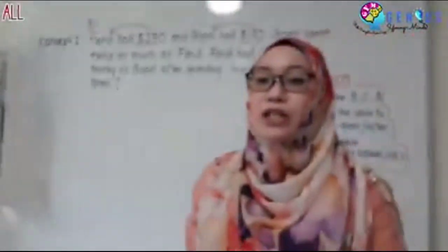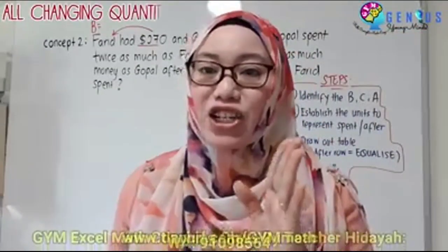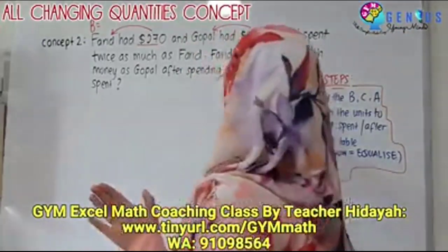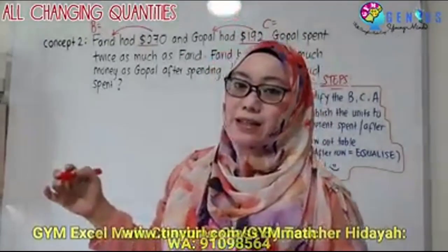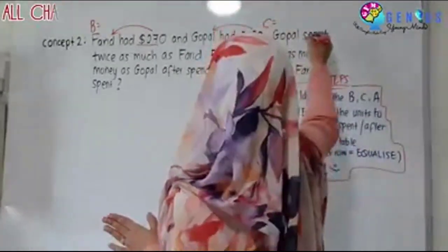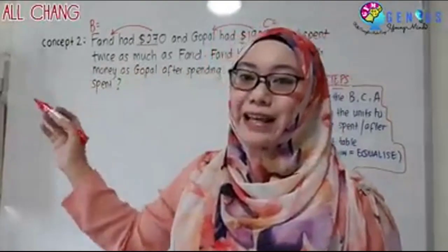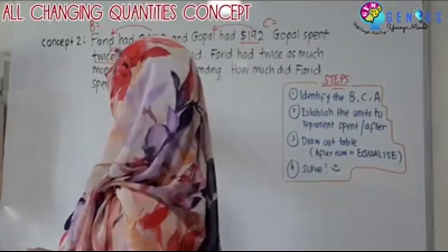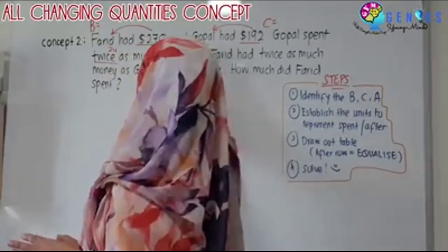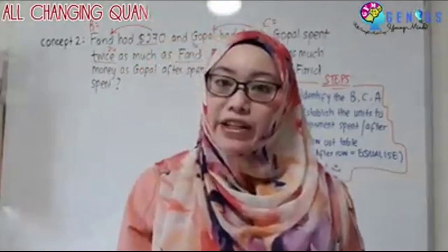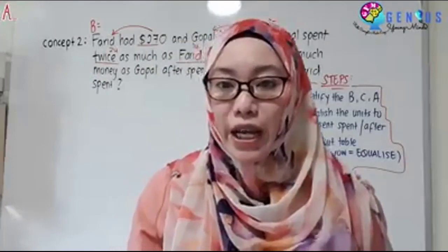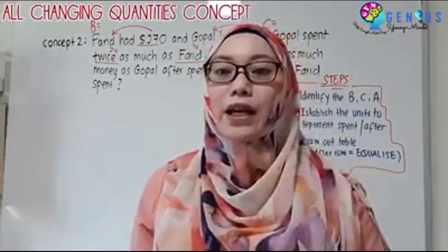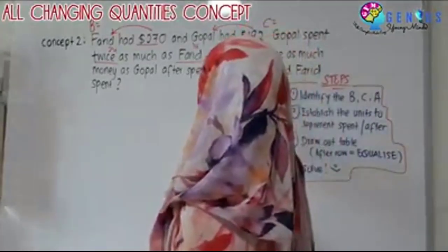Gopal spent twice as much — spent is a change keyword. When you see 'spent' here, this is my change sentence. What did Gopal spend? Gopal spent twice as much as Farid, so twice means two units. As much as Farid is one unit. After the magic phrase 'as much as,' the person mentioned will have one unit. So this is my change.